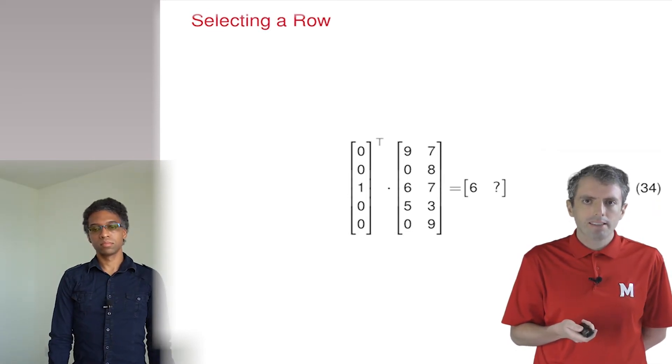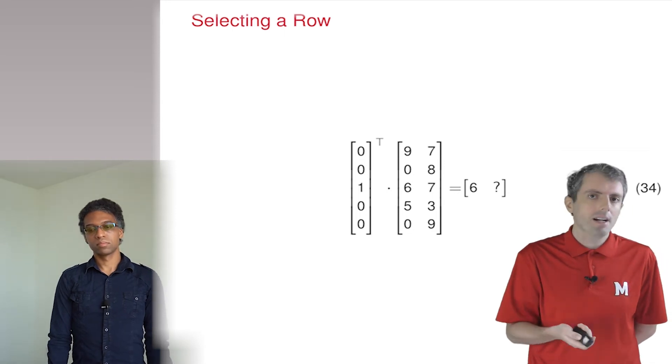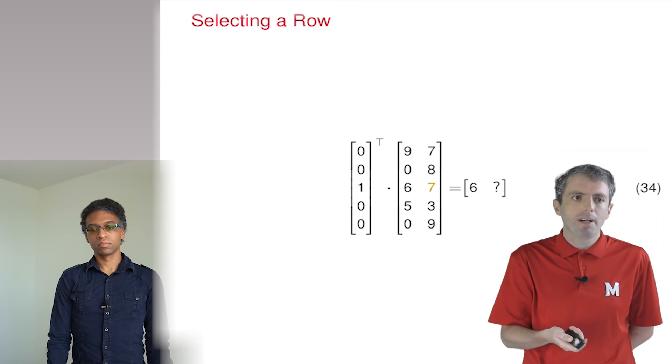For the second cell, it's that same row, but the other column. Ah, I see! So this just picks out the corresponding row. So what happens when you have multiple ones?